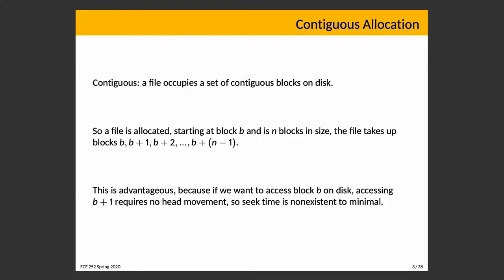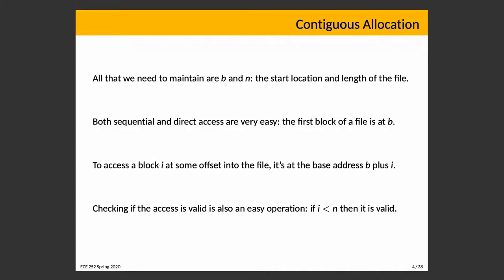With contiguous allocation, seek time is non-existent to minimal. To find the file, you just record a start location and length, which tells you exactly how many blocks there are. Sequential and direct access are easy. For direct access, you calculate the offset. For sequential access, you just read on. Checking if an access is within a valid part of the file is also easy — you just check whether the offset is less than N times the block size.